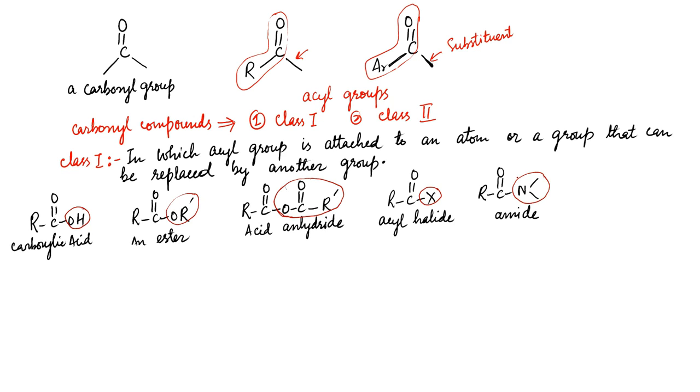Acyl halides, acid anhydrides, esters, and amides are all called carboxylic acid derivatives because they differ from a carboxylic acid only in the nature of the group that has replaced the OH group of the carboxylic acid.